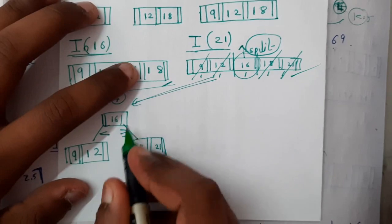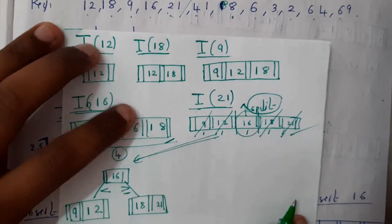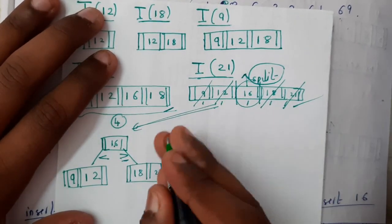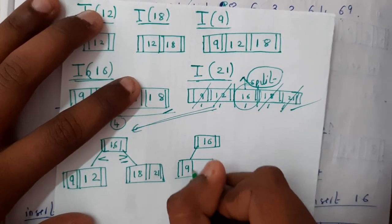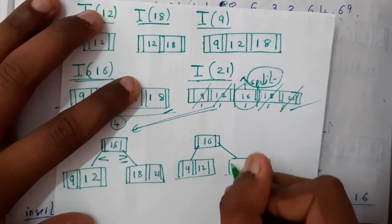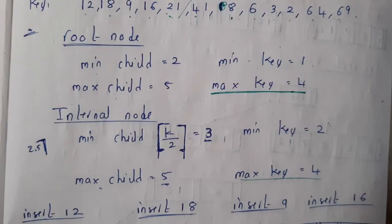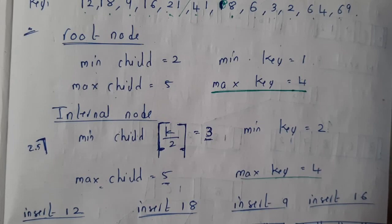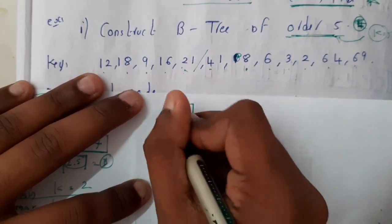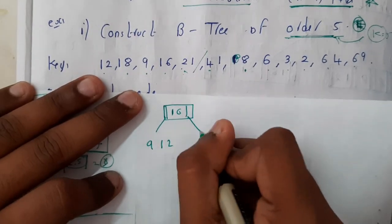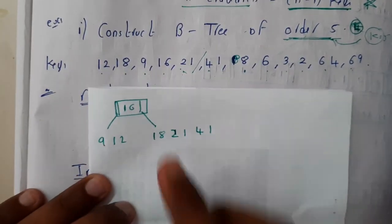Now let us continue with inserting 41. Since 41 is greater than 16, it goes to the right side. So now we have: root is 16, on the left we have 9 and 12, and on the right we have 18, 21, and 41.